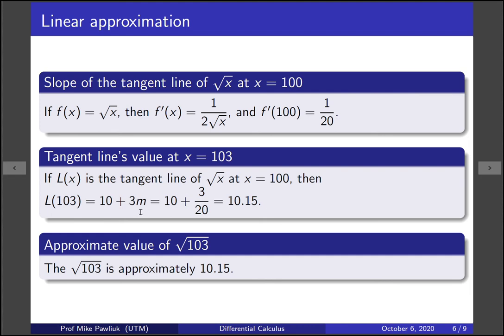Now if we were to instead of going to 103 we wanted to go to 104 how would this change? Well we would be running 4 units and rising 4m so we'd have to modify this part and it would be 4 over 20.